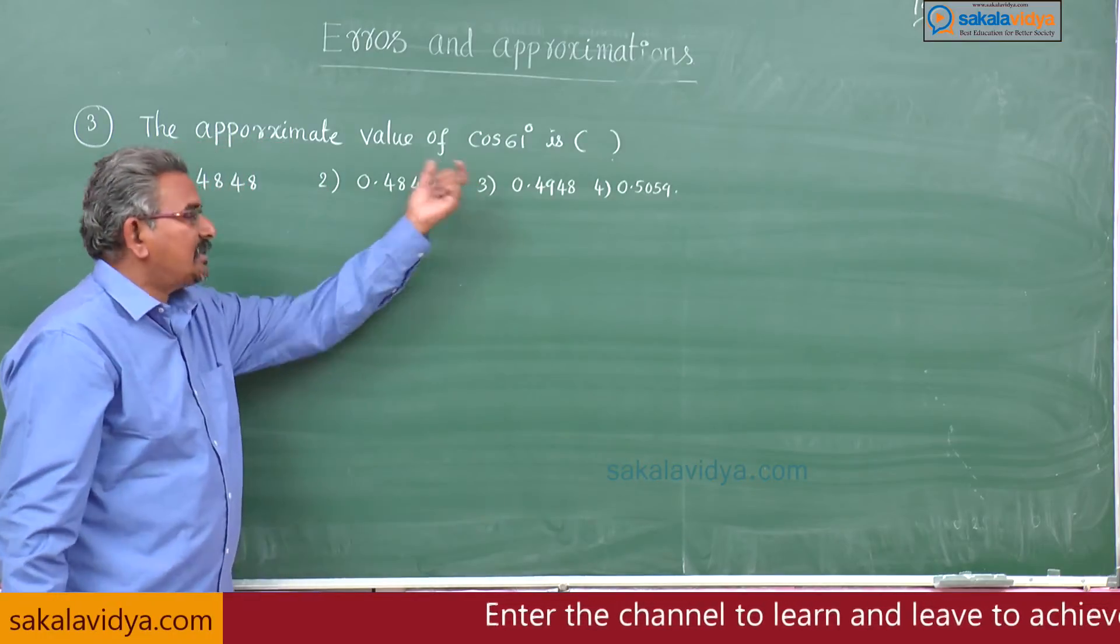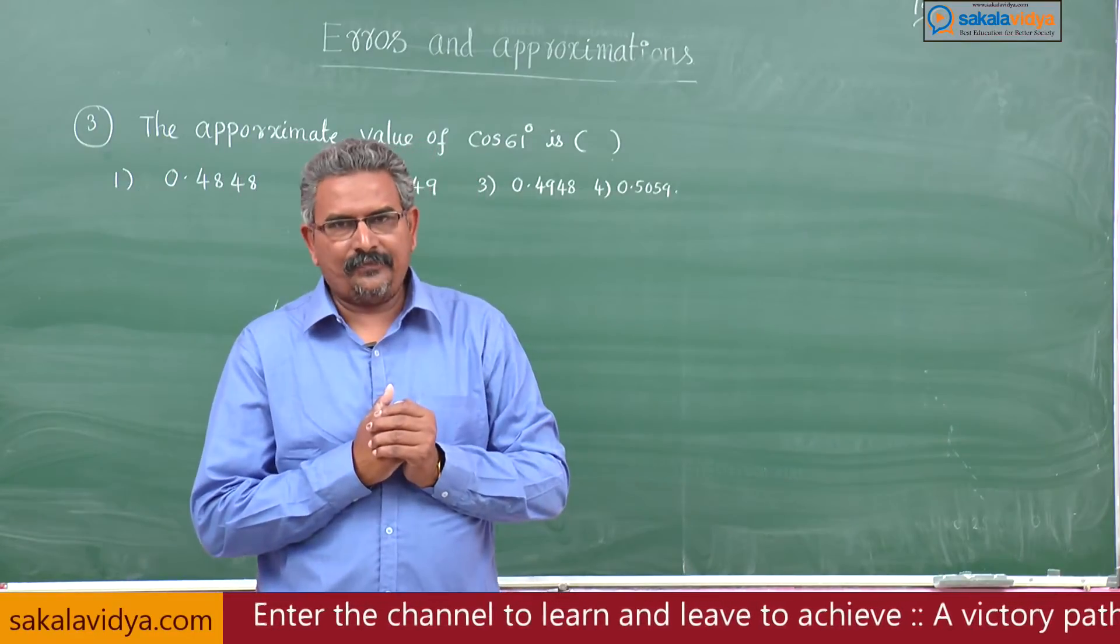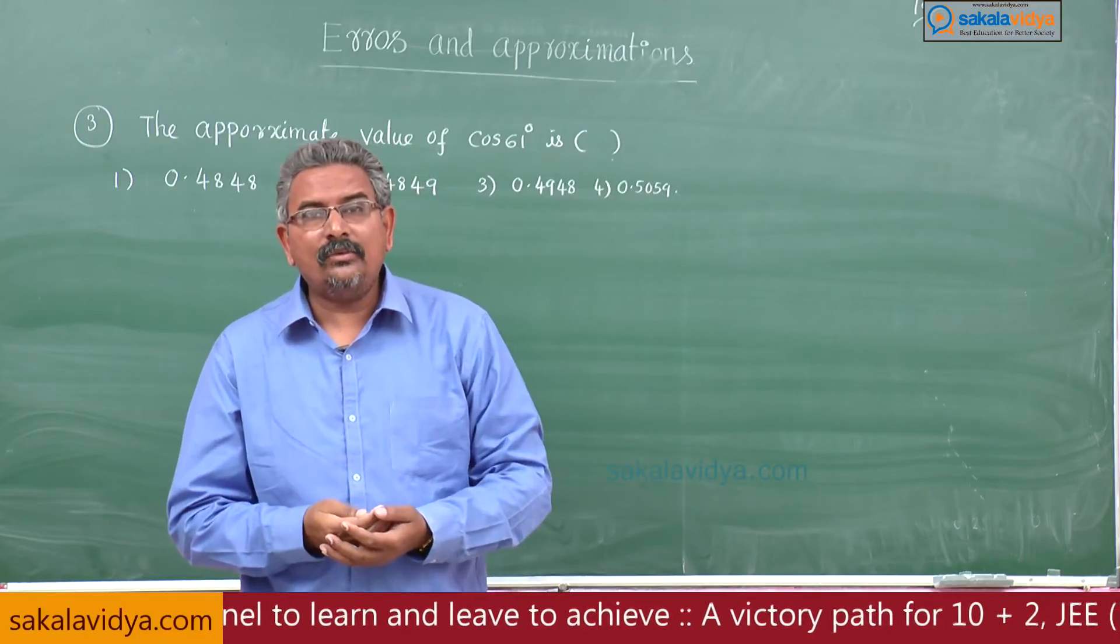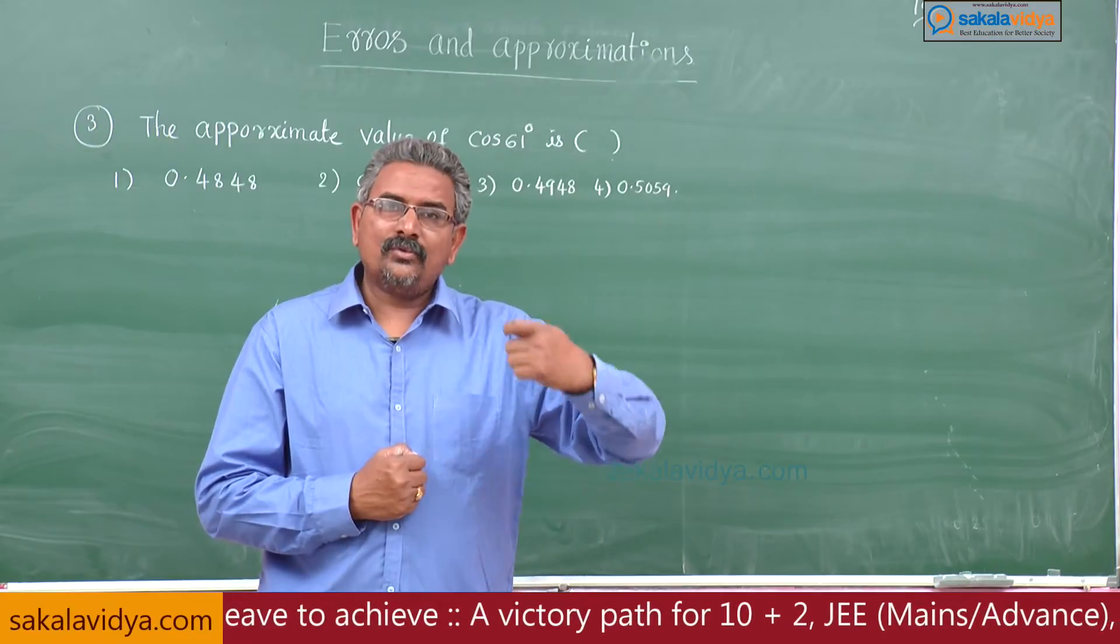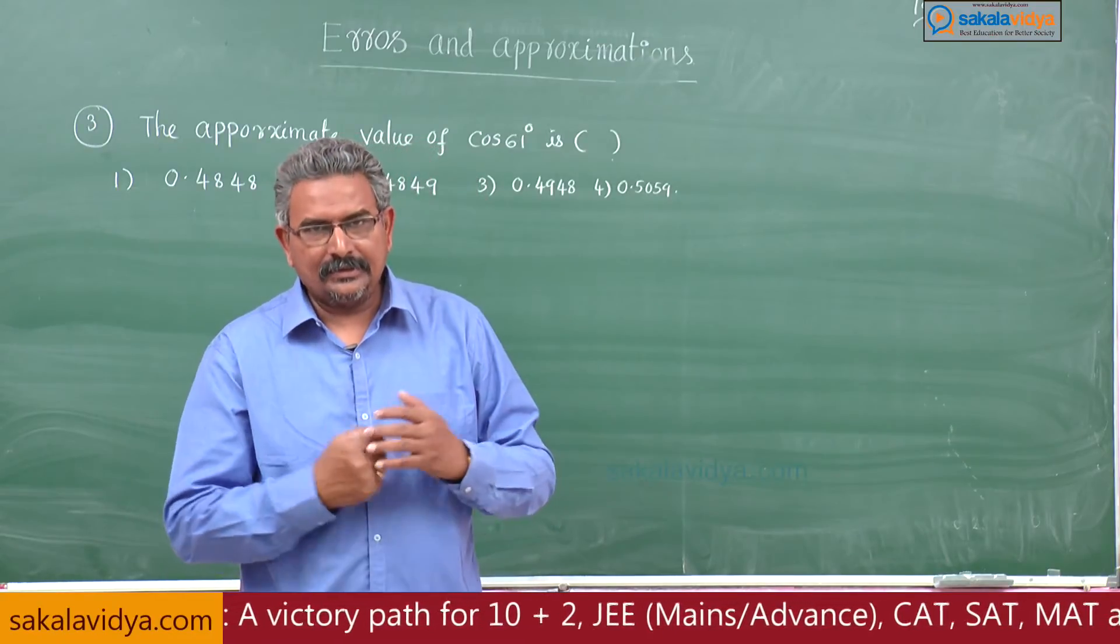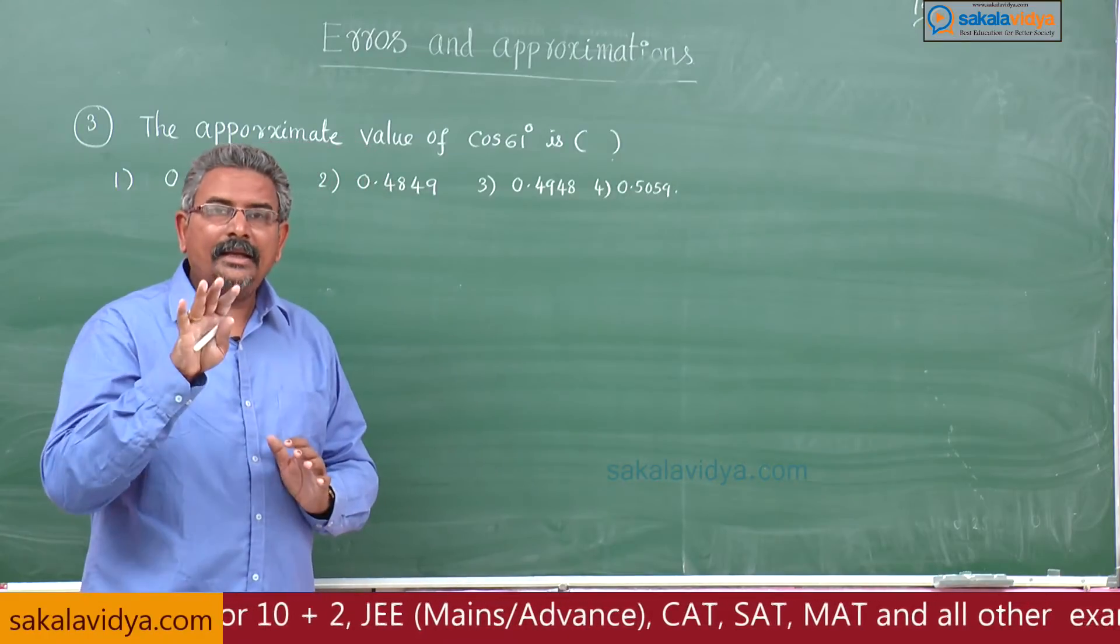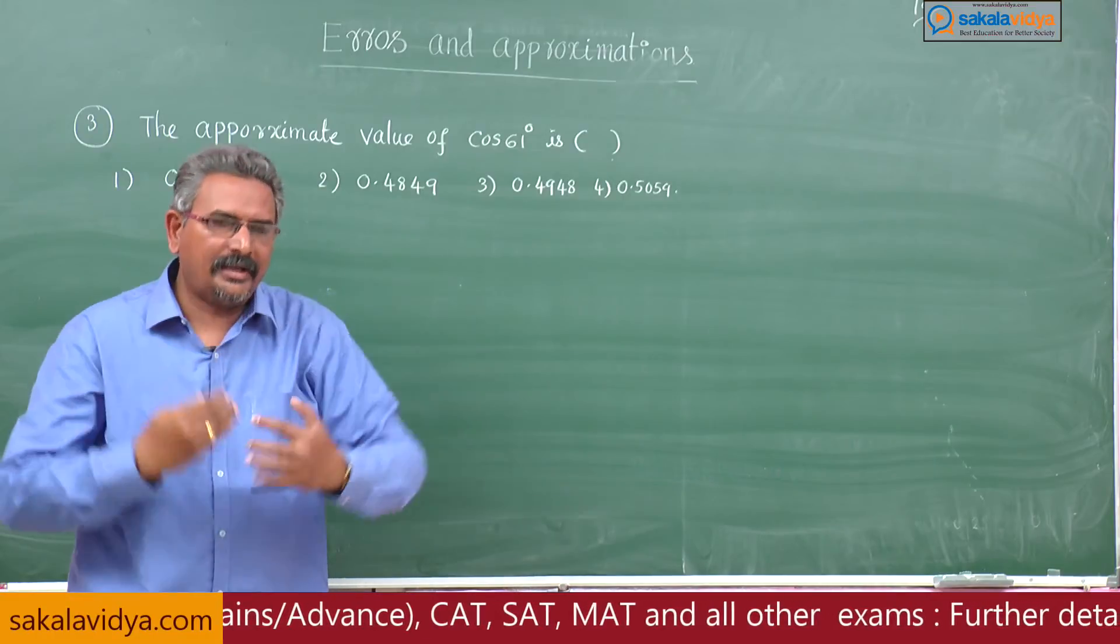Cos 61 degrees comes under cos of x plus delta x. Cos of x plus delta x is approximately equal to cos x minus sin x, whose derivative of cos x is minus sin x, into delta x. Delta x means here 1 degree, but while calculating we should not consider the degrees. Degrees we have to change into radians.